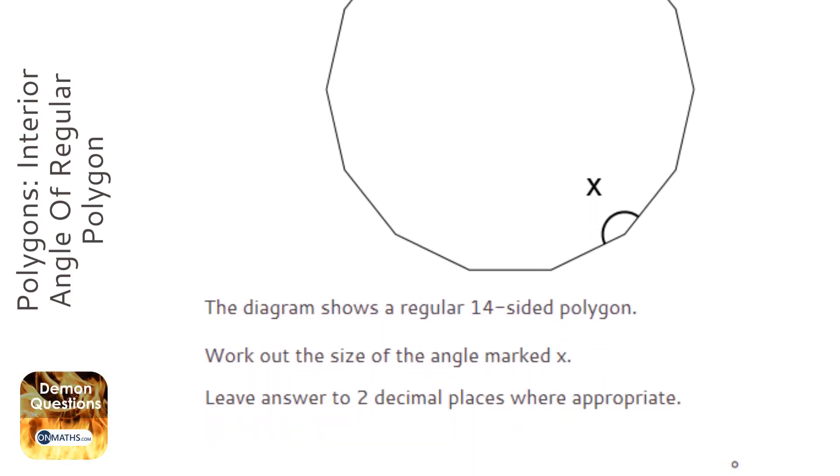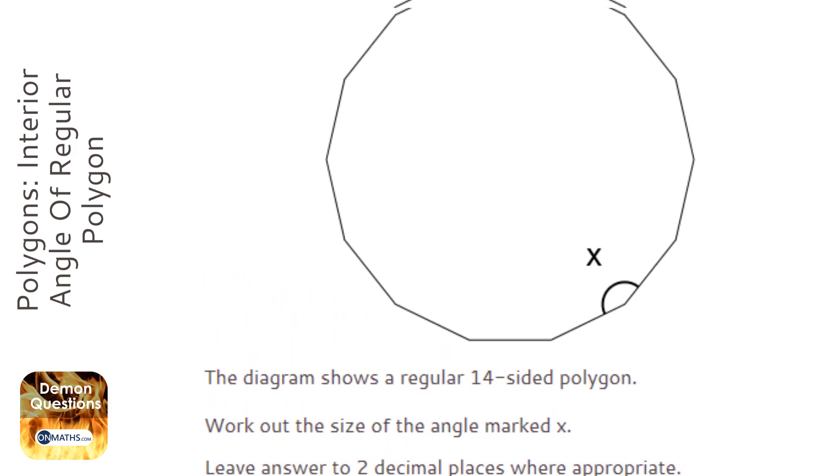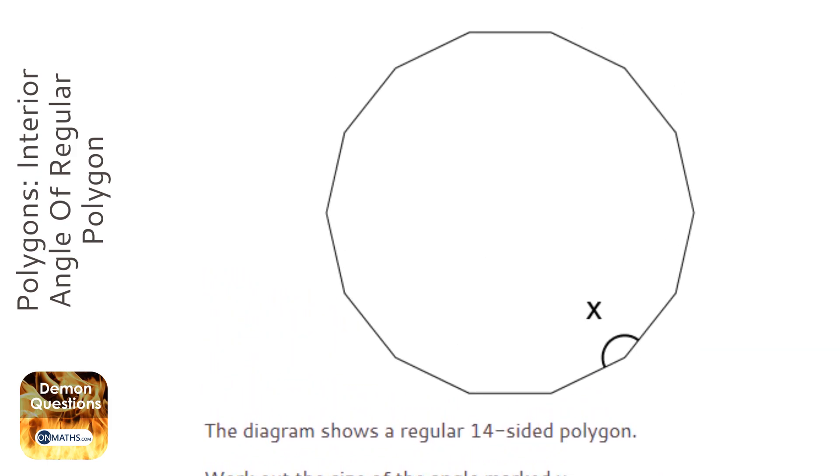Okay, so we're given a 14-sided polygon and we're asked to find out the angle, one of them. An important thing to notice here is it's a regular polygon, which means all of the angles are the same.